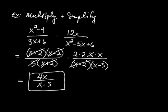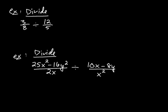Now what about division? Division is closely related to multiplication. Let's look at an example: 3 over 8 divided by 12 over 5. What we do is we leave the first fraction alone — so 3 over 2 times 2 times 2 — and then we take the reciprocal of the second fraction after we change the operation to multiplication.